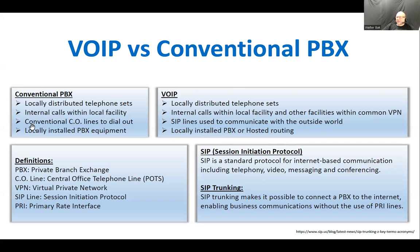So it's just an internal call — no difference if I'm dialing somebody sitting right beside me or sitting 20,000 miles away. No long distance, no selecting an outside line to call, because everything is connected to the VPN. For conventional PBX, we have conventional CO lines — POTS lines — to dial out and connect to the outside world. With VoIP, we don't use CO lines, we use SIP lines. SIP lines are used to communicate with the outside world.